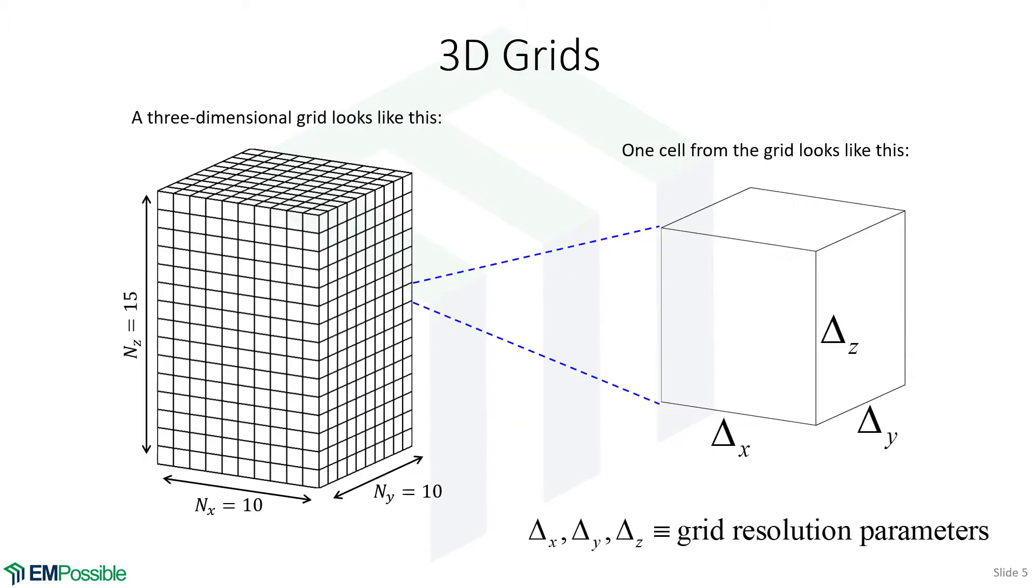We start with a 3D grid, and I'm showing a grid that's 10 by 10 wide and 15 cells tall. Each one of those little blocks is called a cell. If we zoom in on one of those cells, we see that it has dimensions along the x-axis, along the y-axis, and along the z-axis. The size of the cell along each axis are called the grid resolution parameters. We would like our cells to be as cube-like as possible, but it is not necessary.